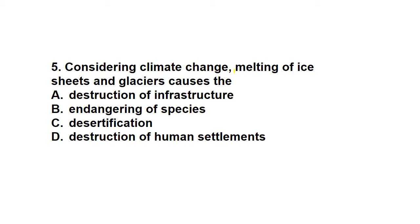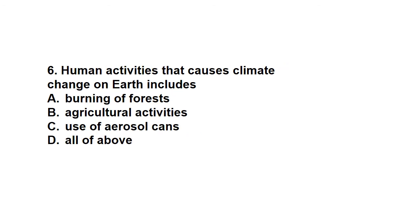Question five considers climate change — melting of ice sheets and glaciers causes what? The option 'destruction of infrastructure' is not correct. 'Endangering of species' — yes, that is correct. So the correct answer is B.